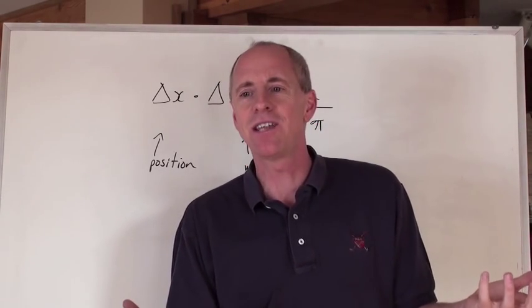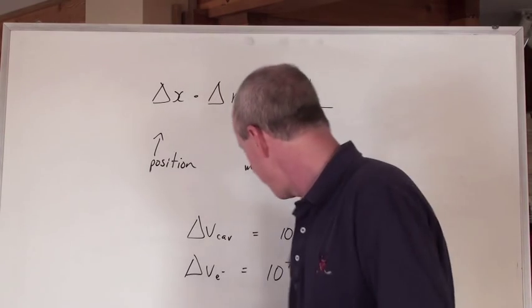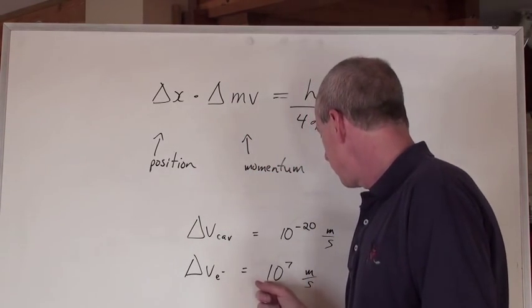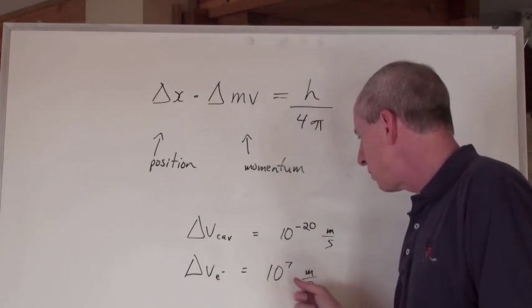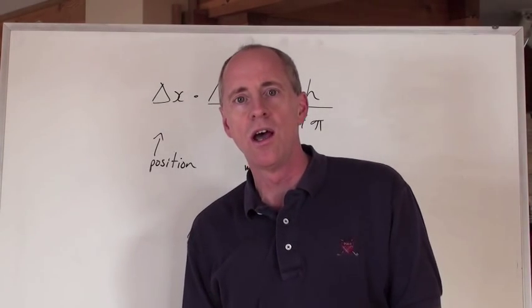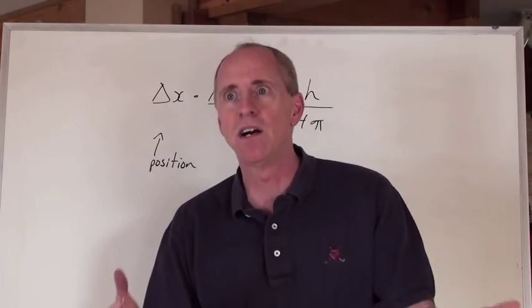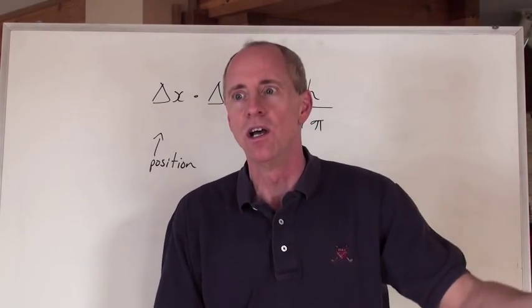So, can you imagine saying, you know, well, here's the uncertainty in the speed of an electron, which is pretty much close to the speed of light, the fastest thing that we know.